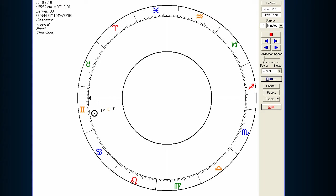The Ascendant is over here on the left, and this is the eastern horizon, and then the Descendant is over here on the right. I have this chart set for today, June 9th, 2010, at about 4:55 in the morning here in Denver, Colorado.